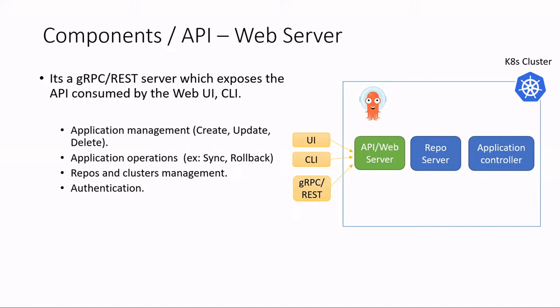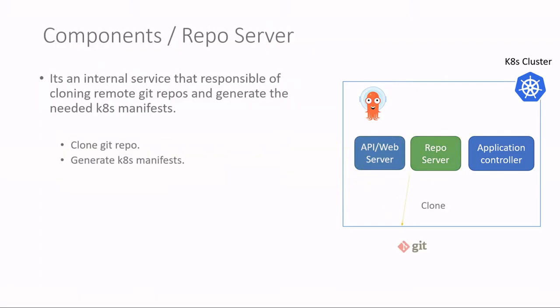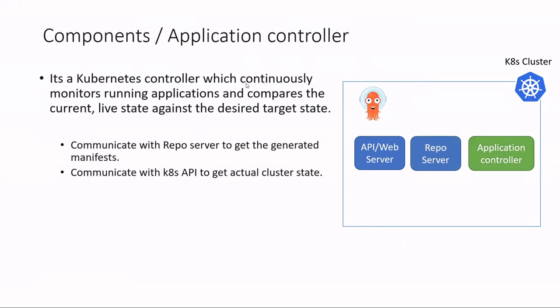For the repo server, it is an internal service responsible for two things: first, cloning your git repos, and second, generating the Kubernetes manifests. For the application controller, it is a Kubernetes controller that keeps monitoring your running applications and compares the actual state in the destination cluster with the desired state in git repos.